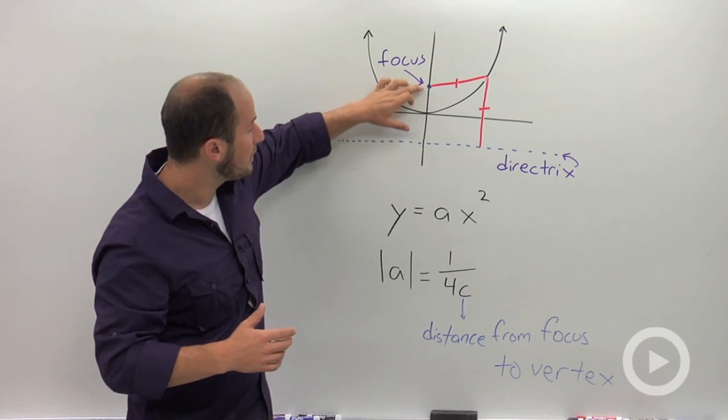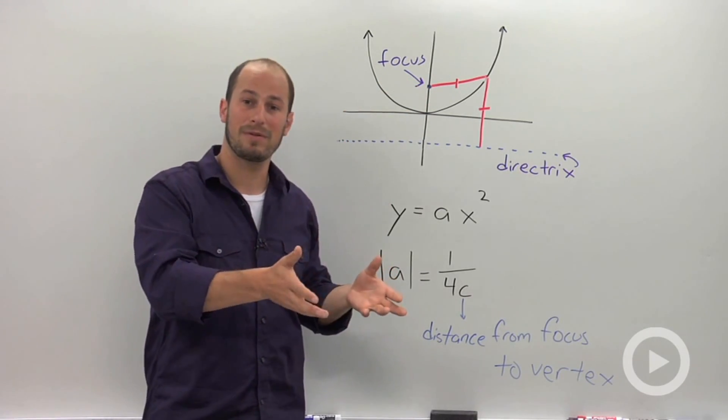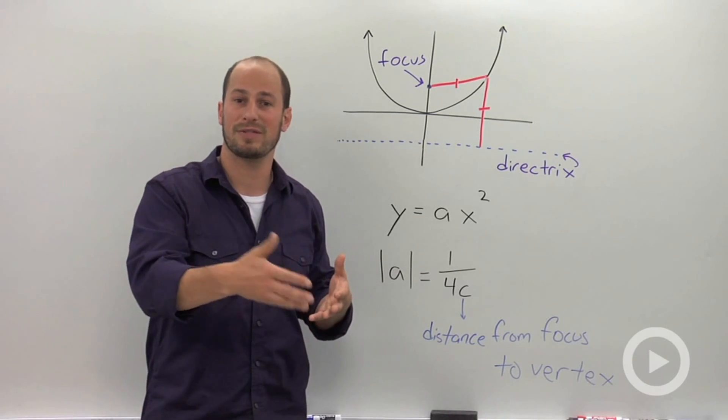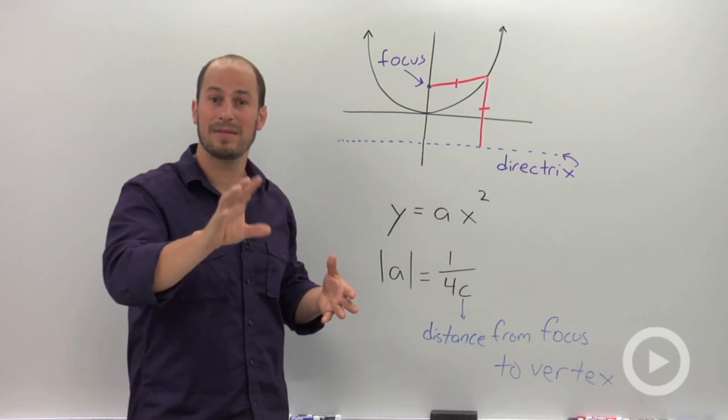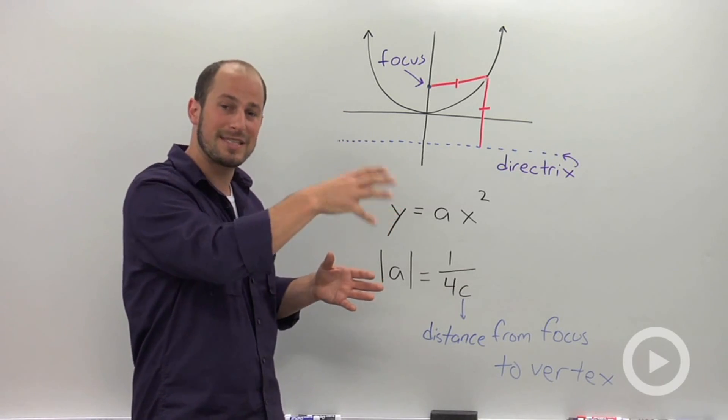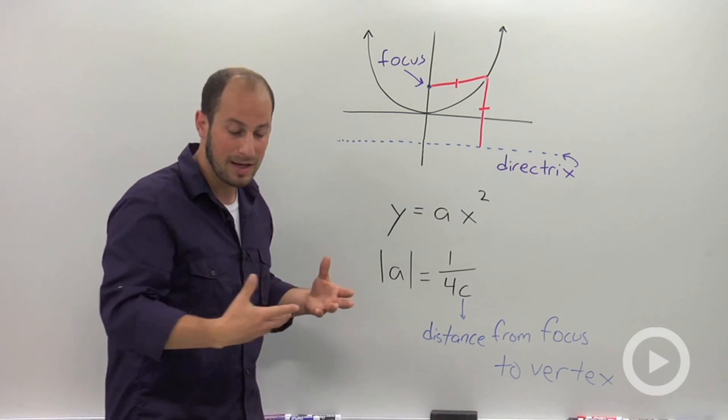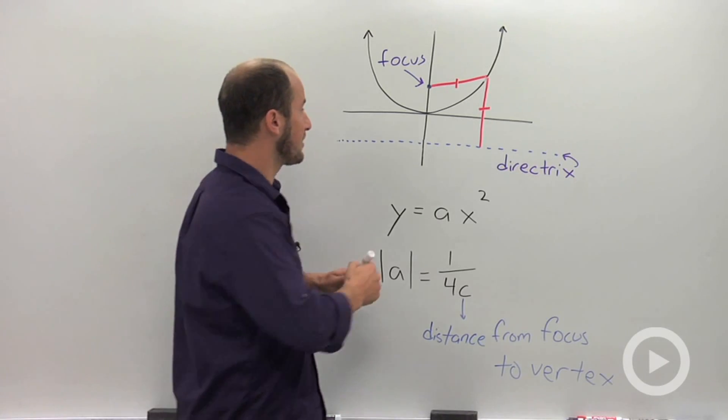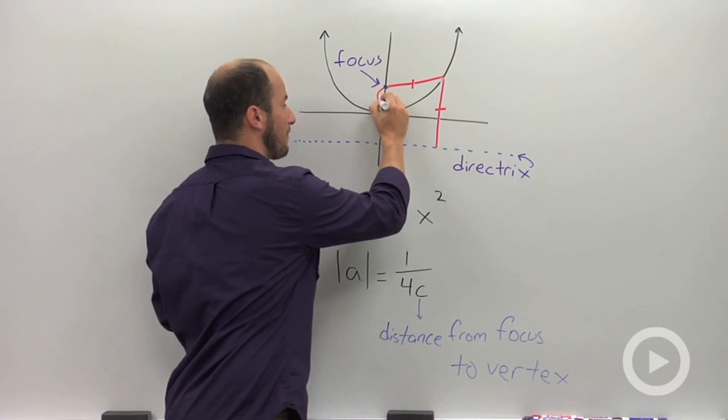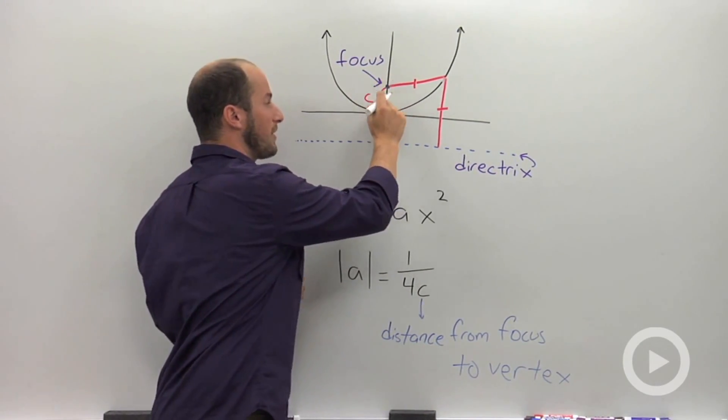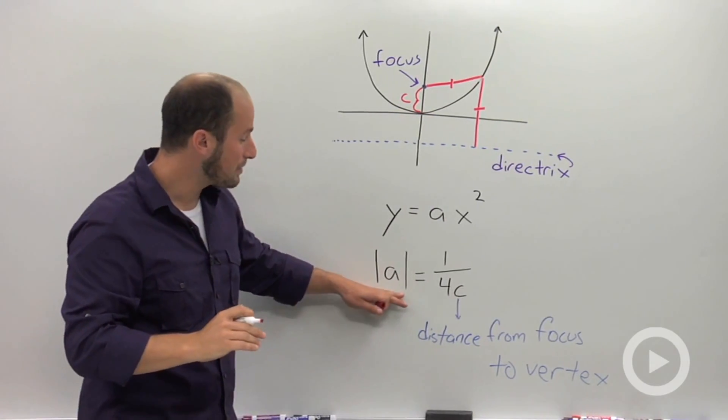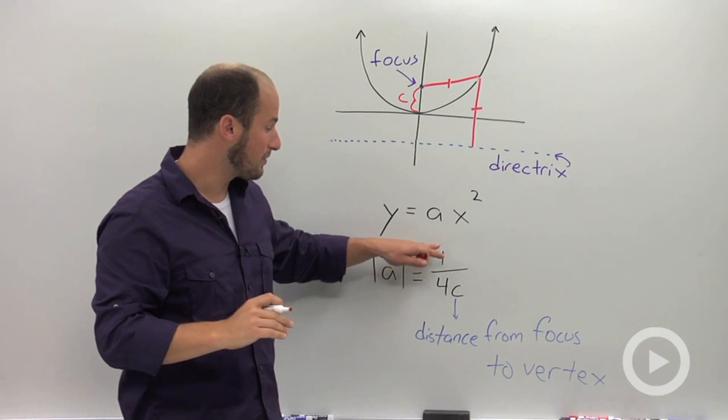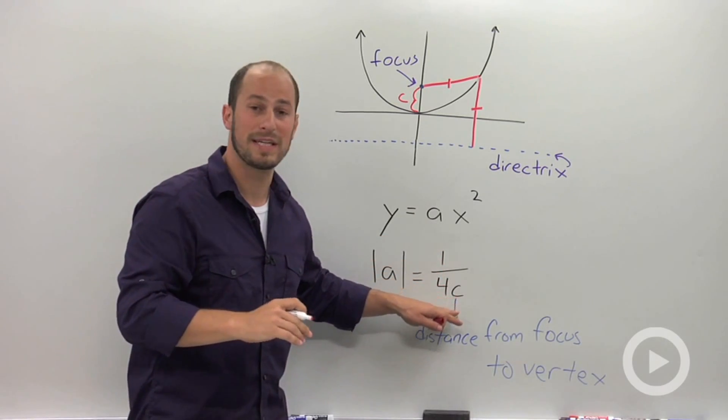And really, we're used to saying parabolas or the equation for quadratics are ax squared plus bx plus c. And I want to just point out that that c in the quadratic equation is different than the c I'm going to talk about now. The c that we're talking about here is really the distance between your focus and your vertex. And the absolute value of a is going to be equal to 1 over 4c, that distance.